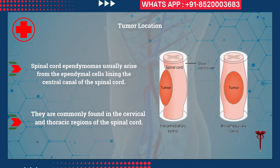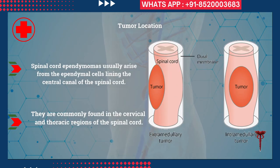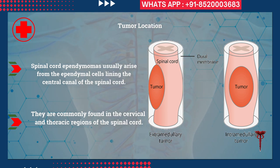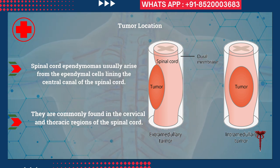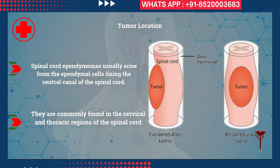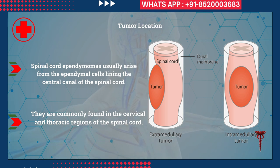Spinal cord ependymomas usually arise from the ependymal cells lining the central canal of the spinal cord. They are commonly found in the cervical and thoracic regions of the spinal cord.